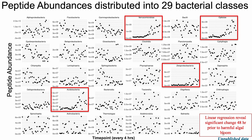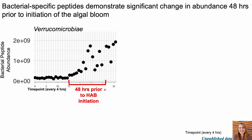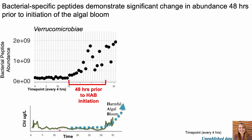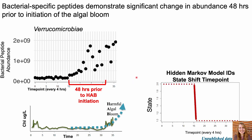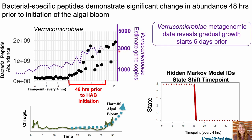I'm now going to zoom in on Verrucomicrobia as an example. Here you can see that 48 hours prior to HAB initiation — I'm showing you the chlorophyll trace again, and you can see that at the bottom of this figure the phytoplankton bloom starts on the last day of the time series. Using a hidden Markov model on the peptide data, Miranda was able to identify a non-reverting state shift in this data set that identifies time points for us to specifically focus on, because something probably significantly changed in that water chemistry to trigger this change in state. Although the metagenomic data confirms the presence of Verrucomicrobia, it only reveals a gradual growth over those six days and doesn't provide any data on real-time protein functions — what these organisms are doing and why they're succeeding in this ecosystem. Whereas metaproteomics does provide that.